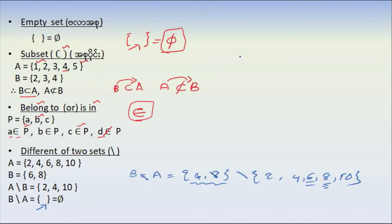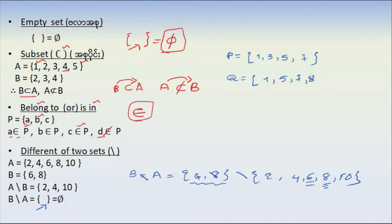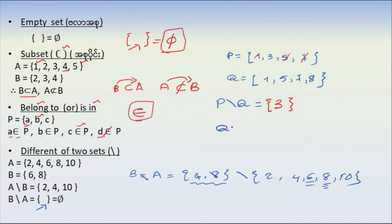Let's say P is the set {1, 3, 5, 7, 2} and Q is the set {1, 5, 3, 7, 2}. P different Q, meaning P minus Q — since P and Q have the same elements, P different Q is equal to the empty set.